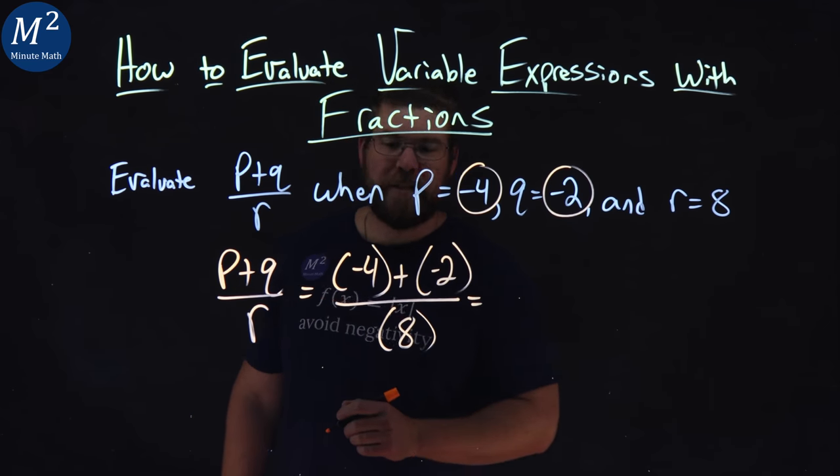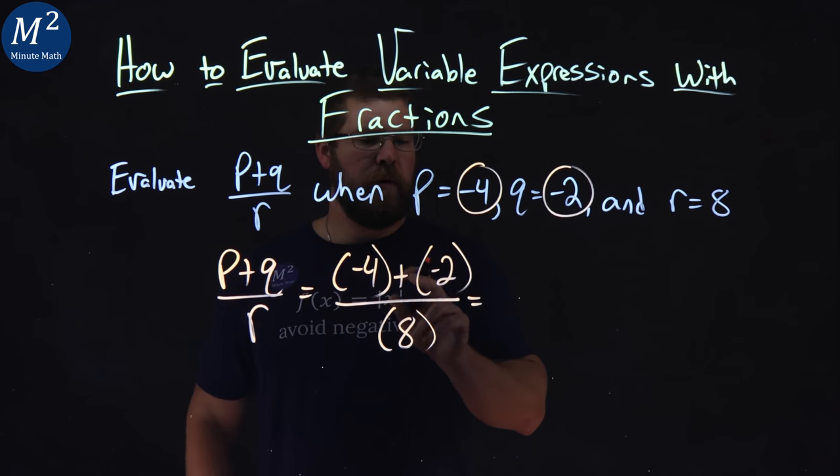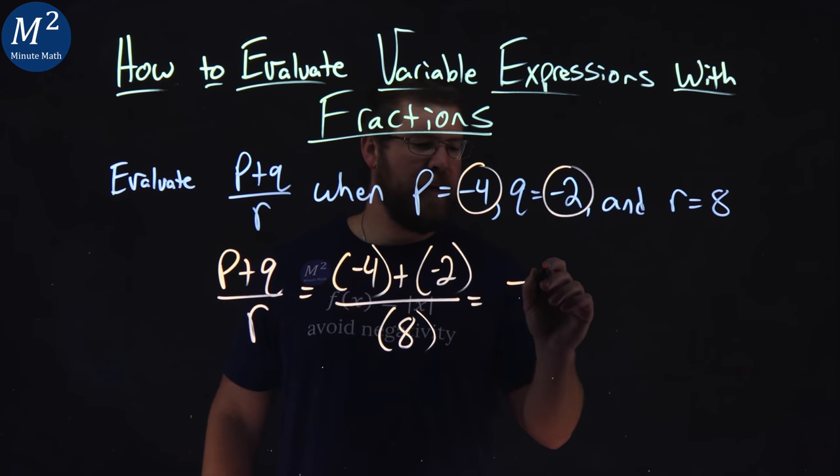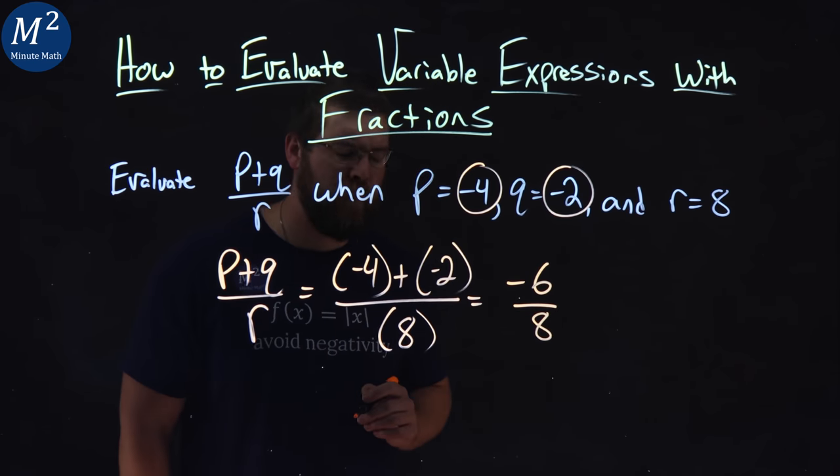Now, let's simplify this fraction. Numerator first: negative 4 plus negative 2 is negative 6, over 8. That's just 8, it doesn't simplify anymore.